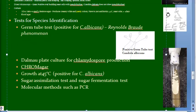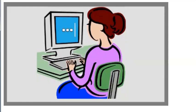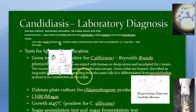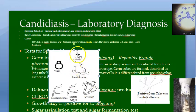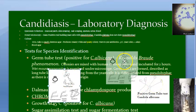The germ tubes are long tube-like projections extending from yeast cells. One yeast cell connects to another with a long tube and there is no constriction between them. Draw both a pseudohyphae diagram and a germ tube diagram in your exam. This positive germ tube test — Reynolds-Proud phenomenon — is for Candida albicans.